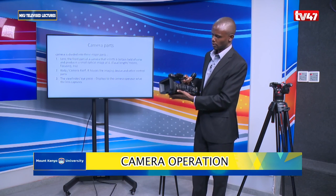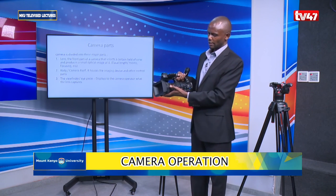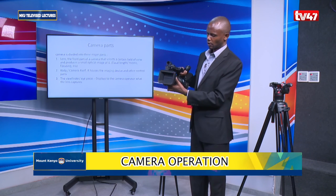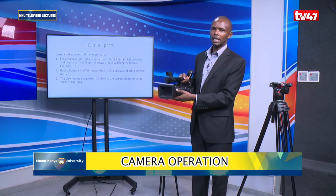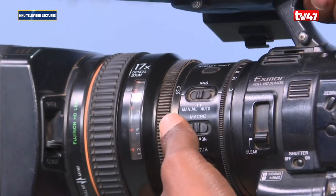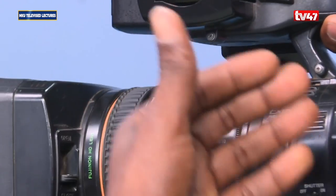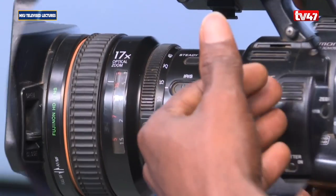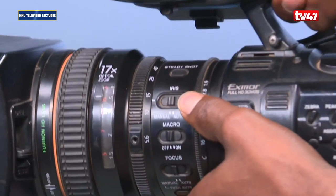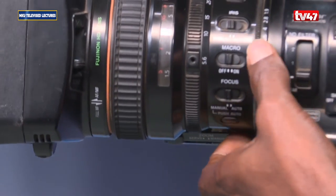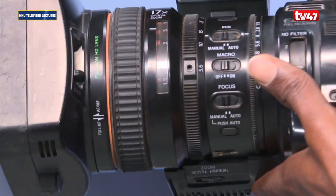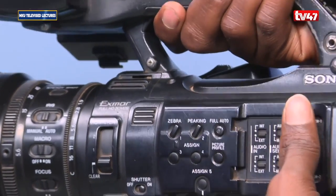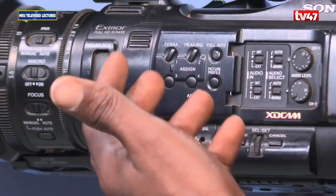When it comes to the lens part, the lens has different parts you can use to control the kind of image or the appearance of your image. We have the focusing ring and we have the zoom ring. The purpose of the zoom ring is to bring an image closer or take it farther away.